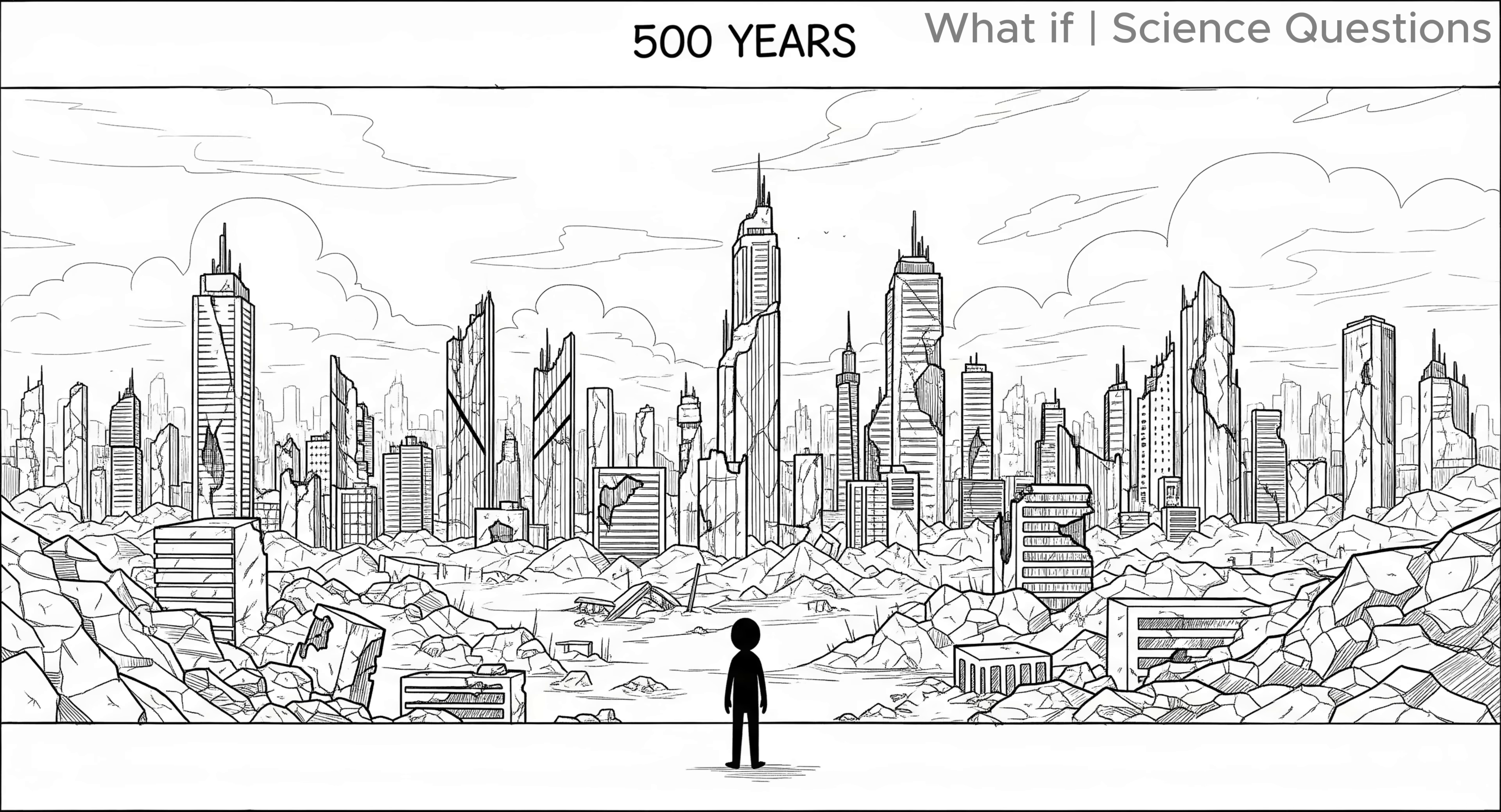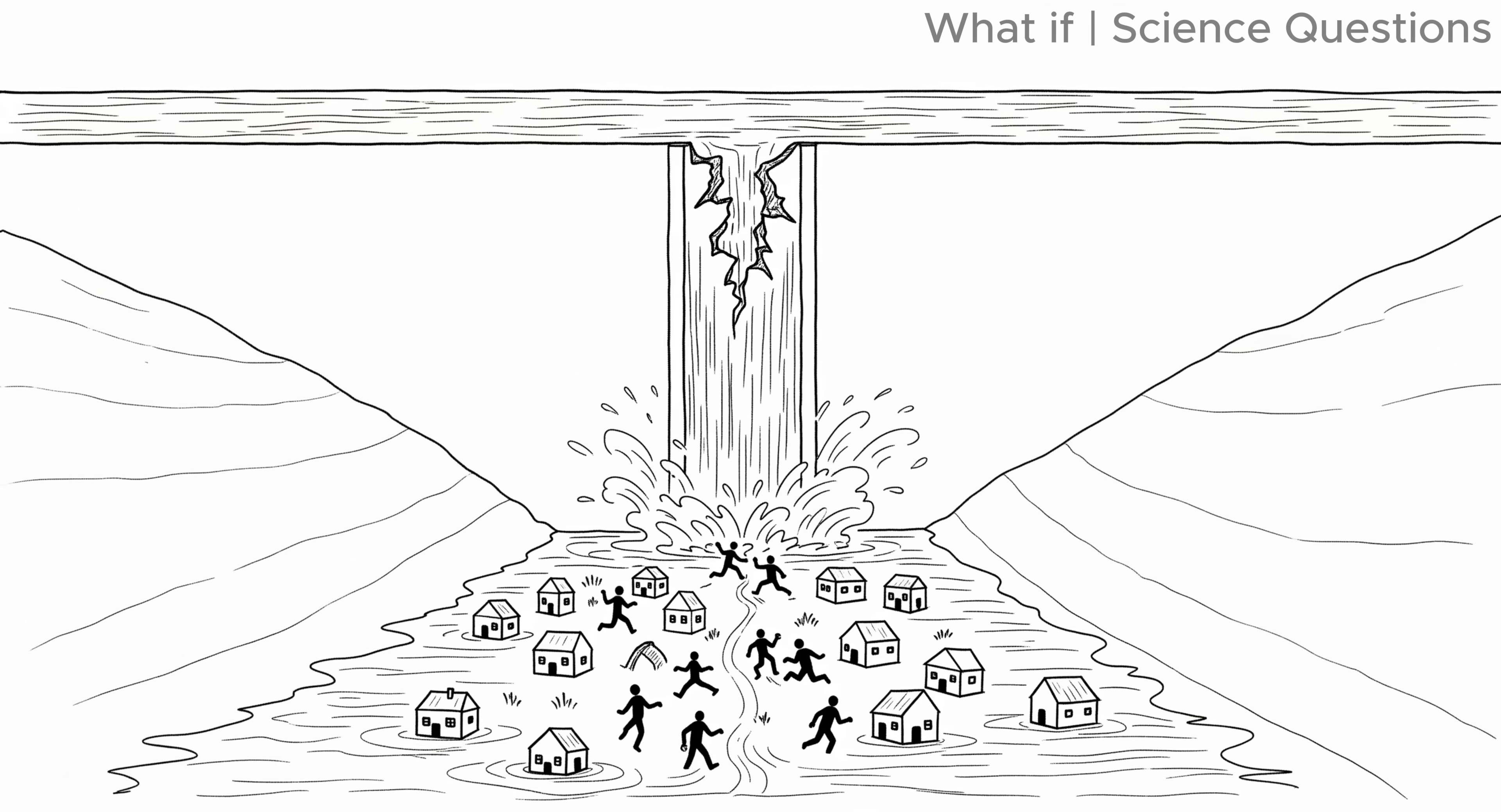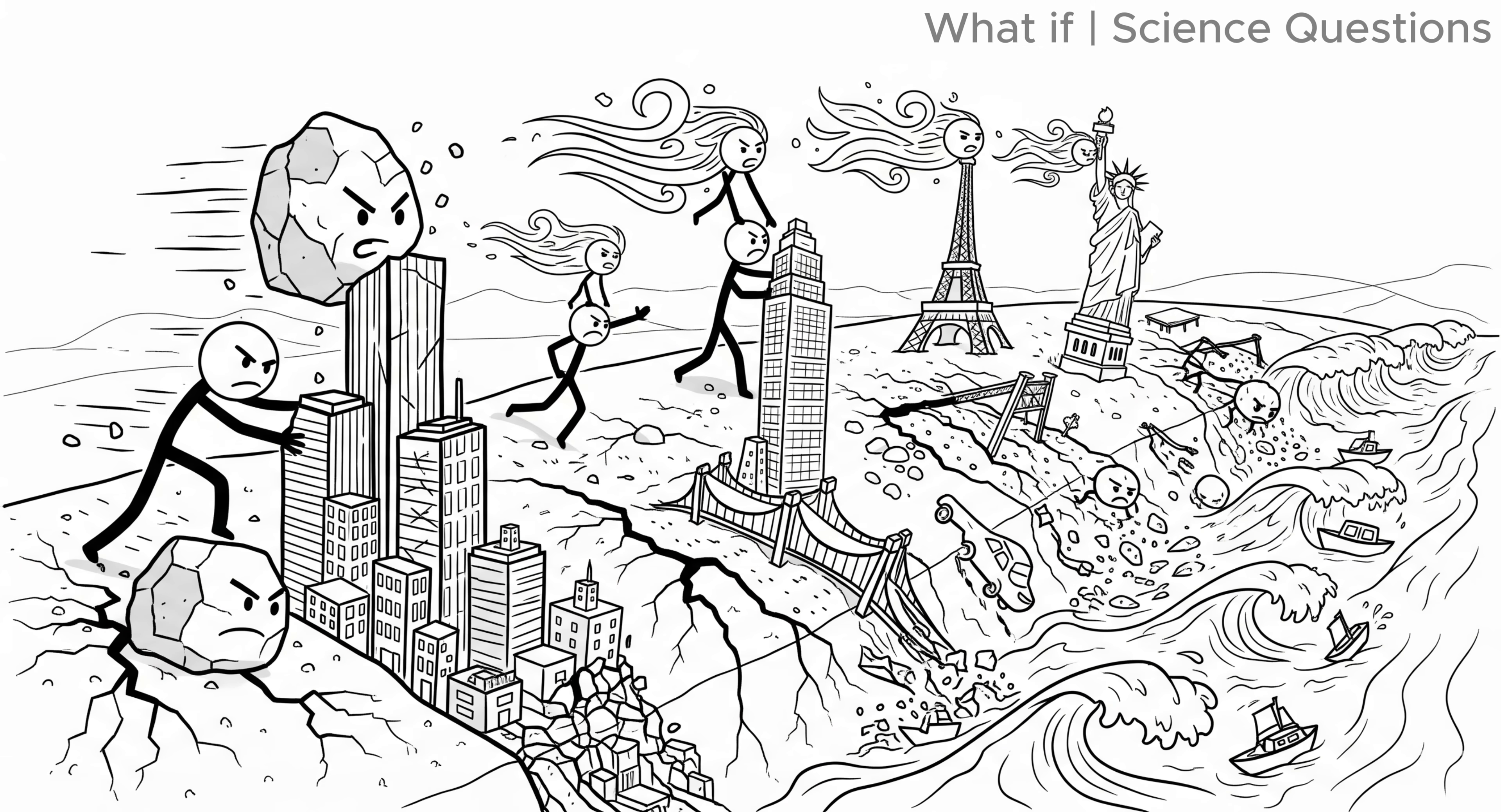In five hundred years, most buildings would be gone, collapsed into rubble and dust. In one thousand years, entire skylines would be buried under jungles, deserts, or oceans. Our dams would burst, flooding valleys. Our tallest towers would lie shattered across the ground. The earth would not only erase the surface, it would recycle it.